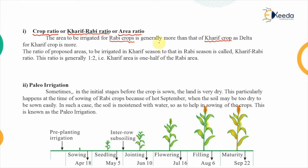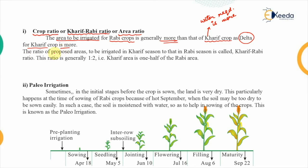Out of the kharif crops and the rabi crops, the water required by the kharif crop is more than that required by the rabi crops. That means if we supply the same amount of water, more area will be irrigated in case of the rabi crops. The area irrigated under rabi is generally more than that of kharif because the delta for the kharif crop is more — the depth of water required for kharif is greater than for rabi.